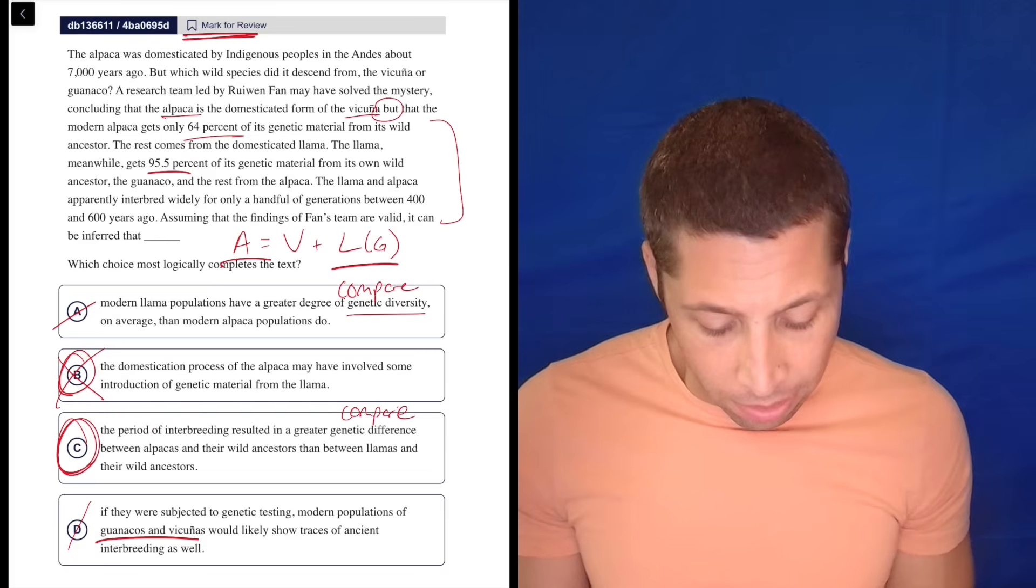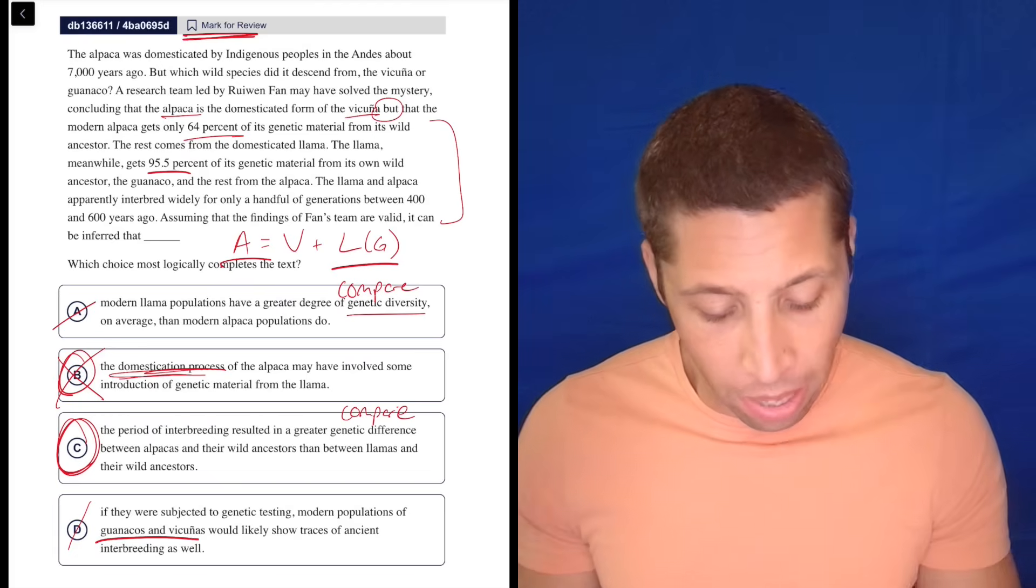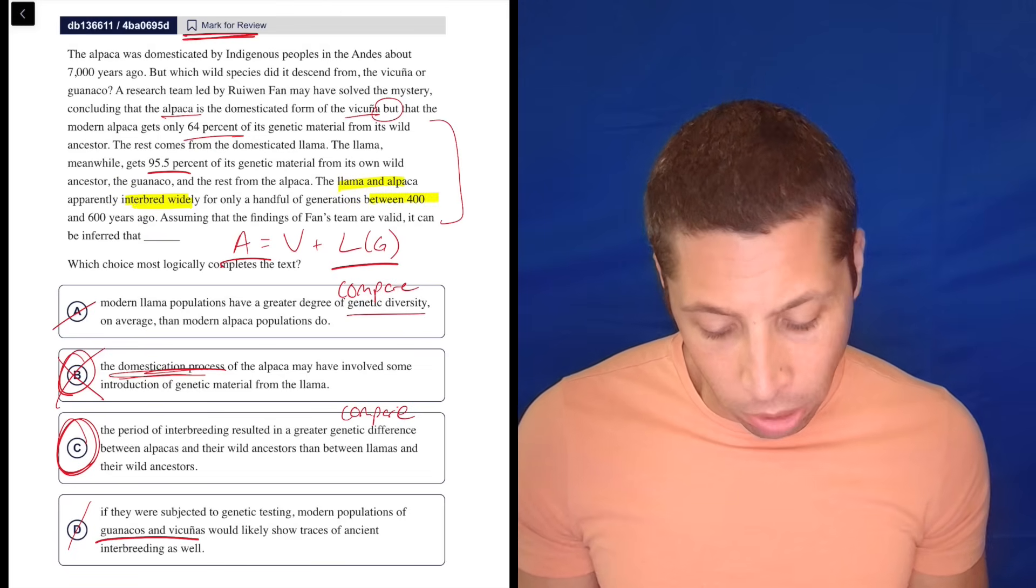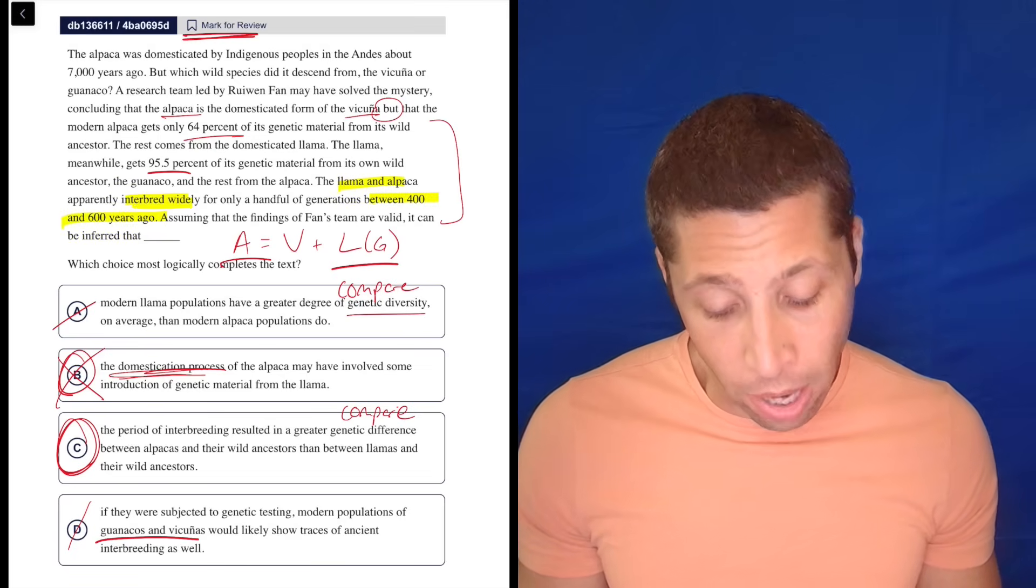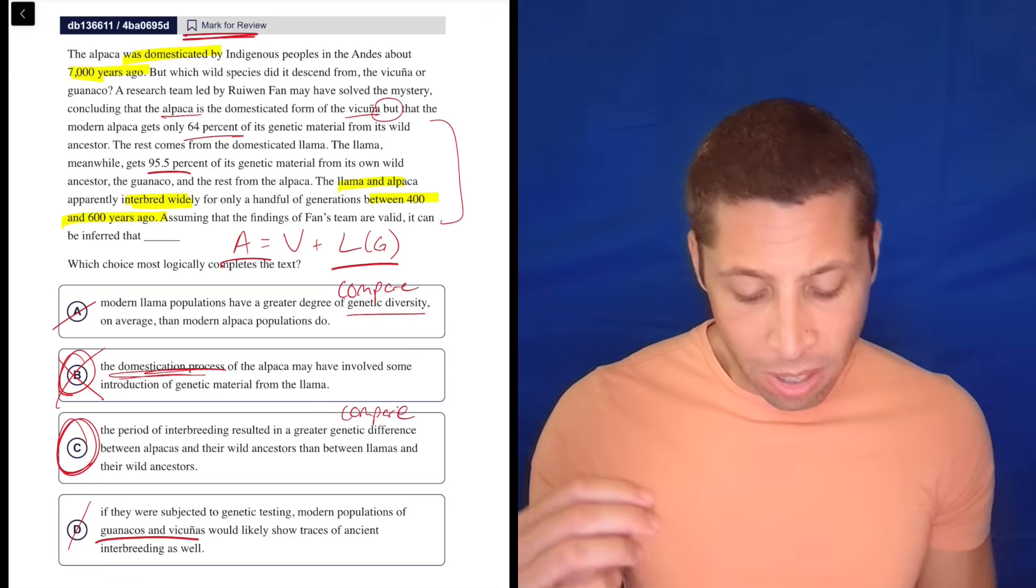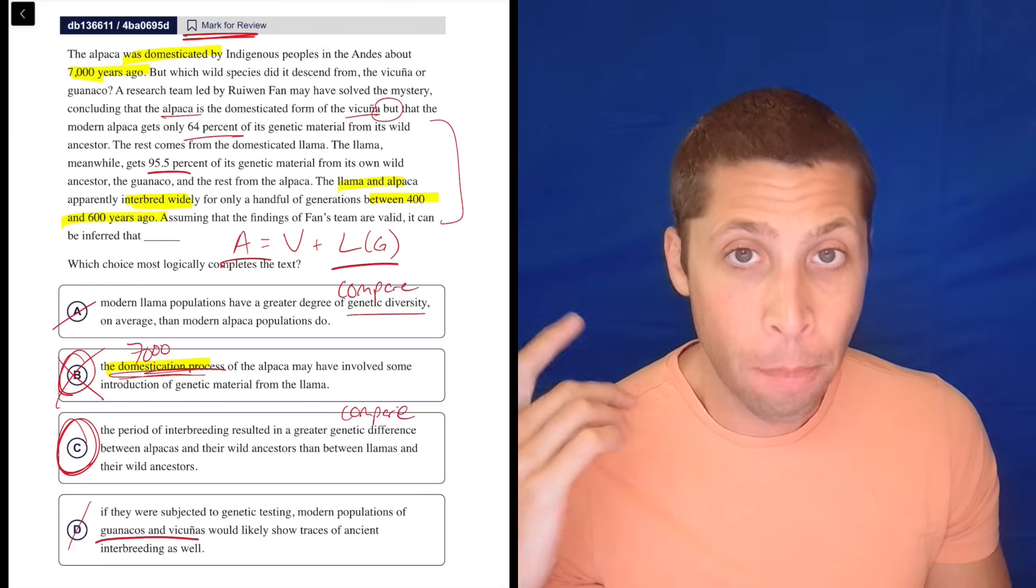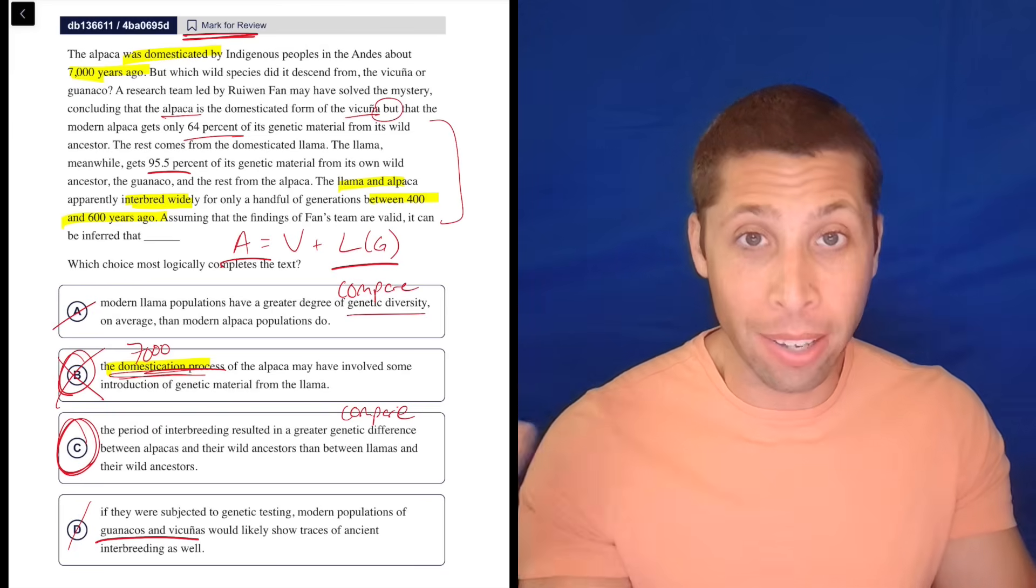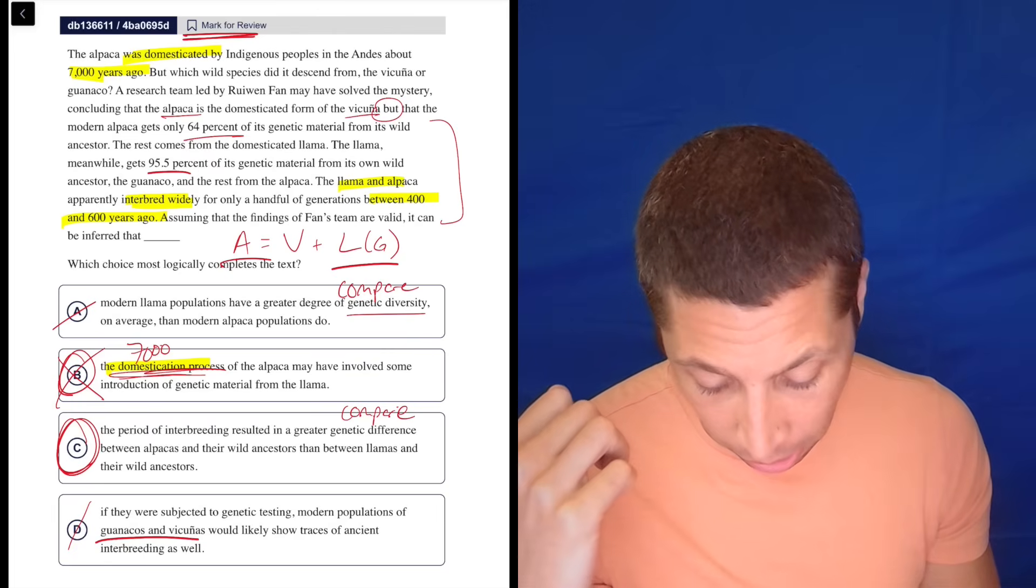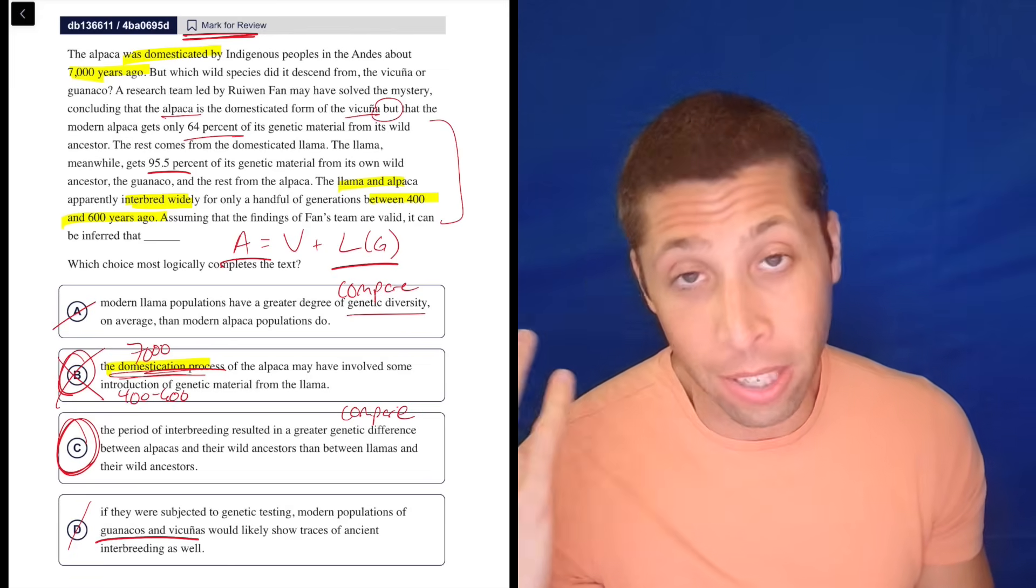The problem with this choice is the domestication process itself is not really what we're talking about here because, you know, I just don't really notice this. I don't pay attention to it. But they're interbreeding the llama and the alpaca 400 and 600 years ago. However, it says early on, and I would have just kind of ignored this, the alpaca was domesticated by indigenous peoples in the Andes about 7,000 years ago. So the domestication process is happening 7,000 years ago. But the interbreeding, the reason alpacas have all this llama in them is happening 400 to 600 years ago. So that's different. So – and that's, you know, that's a real reason.